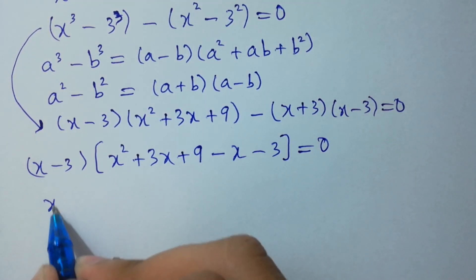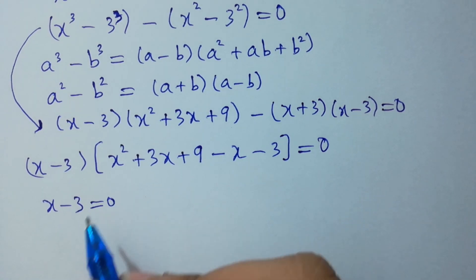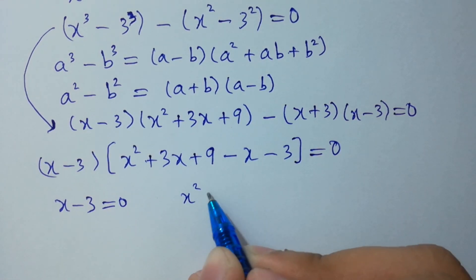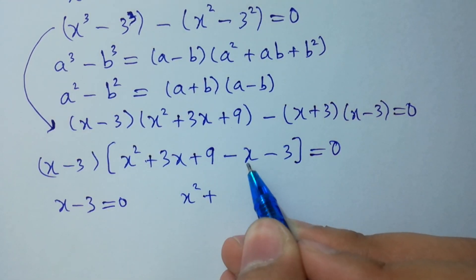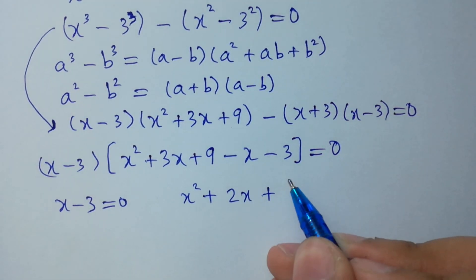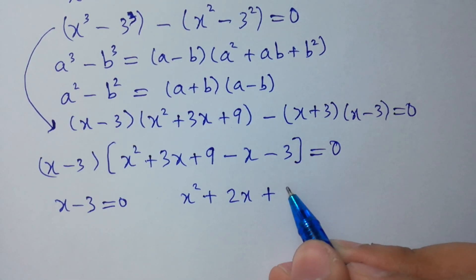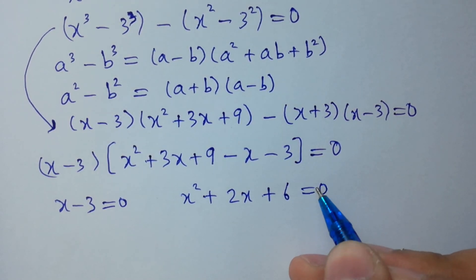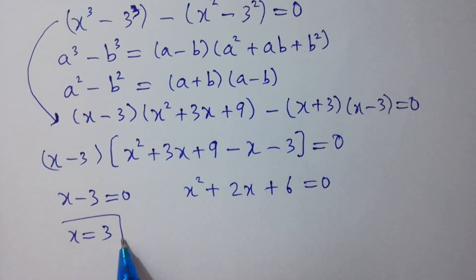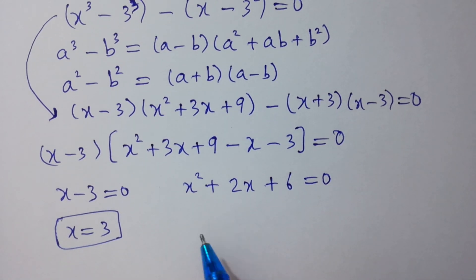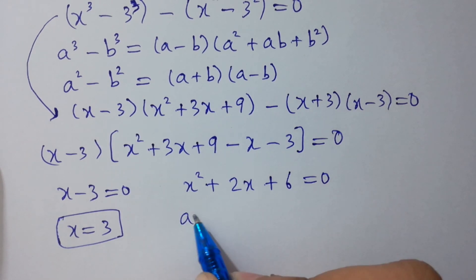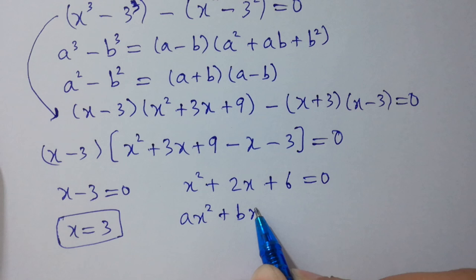Either x minus 3 equals 0, or x squared plus 3x minus x — that is 2x plus 9 minus 3, which is 6 — equals 0. So x equals 3, which is our real solution. And here this is our quadratic equation.